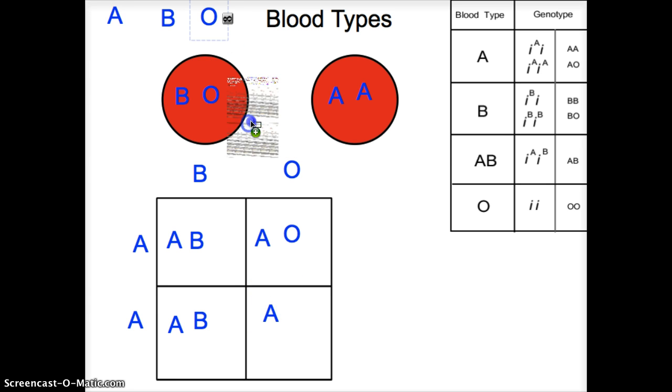So remember, AO means blood type A, blood type A. So AA is A, and so is AO. They're both A.